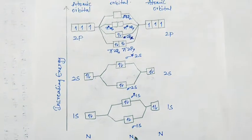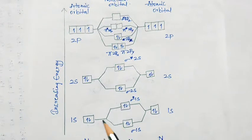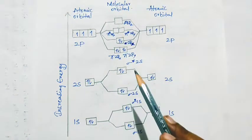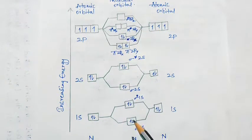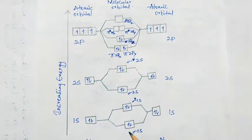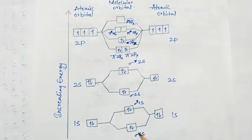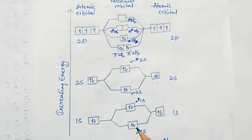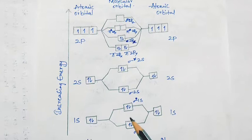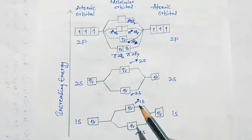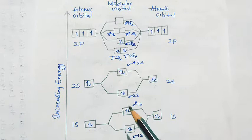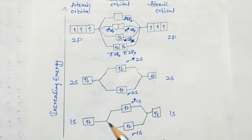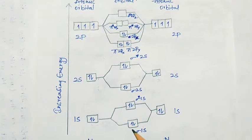So 7 electrons plus 7 electrons — totally 14 electrons in the nitrogen molecule — will be distributed in these molecular orbitals. The low energy ones are the bonding orbitals, and the higher energy ones are the antibonding orbitals. The electrons will first be filled in the bonding orbitals.